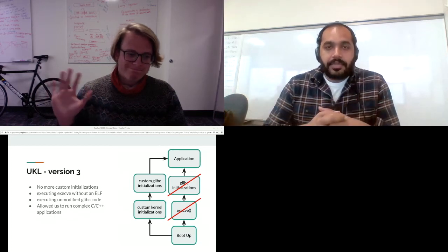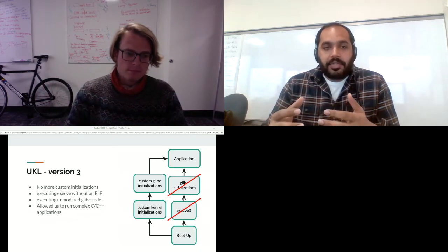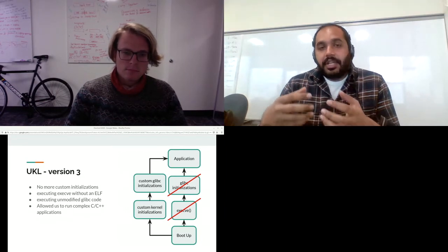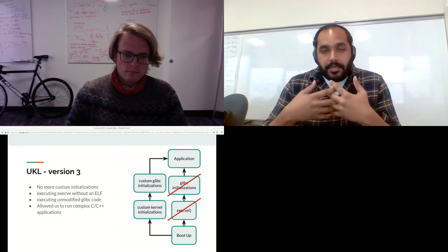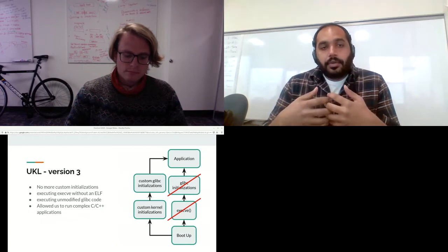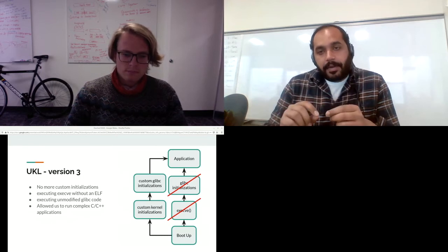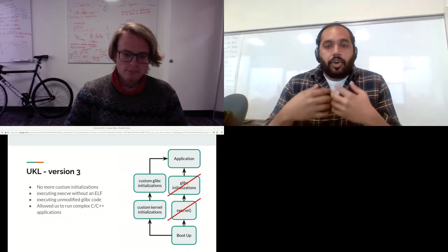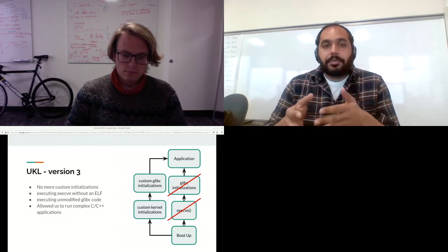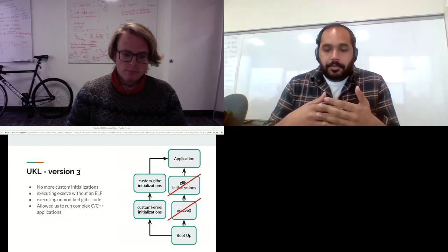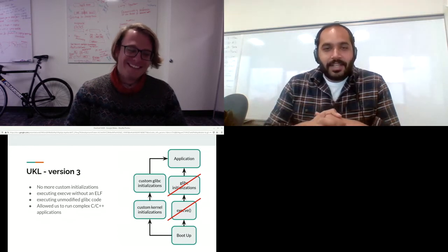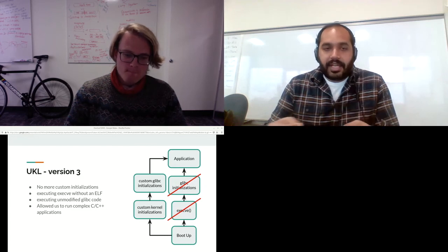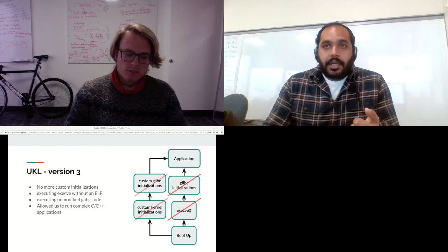We were still doing a lot of our own custom initializations before executing application code. Tommy, my co-presenter, wanted to run complex C and C++ applications on UKL, which requires the full set of glibc initializations — which in turn required full initializations in execve. So Tommy went through all this code and we got rid of our hand-rolled initialization code. We modified the execve code so it ran without actually requiring an ELF file, going through full initializations and setup of the address space, mm struct, and task struct, copying kernel command line arguments to the user stack before running user code. We then jumped into glibc initializations and everything worked like a charm.